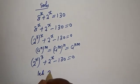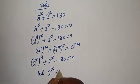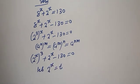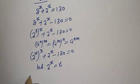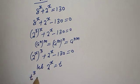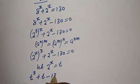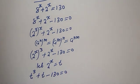Let 2 raised to power s equal t. Then t raised to power t plus t minus 130 is equal to zero.